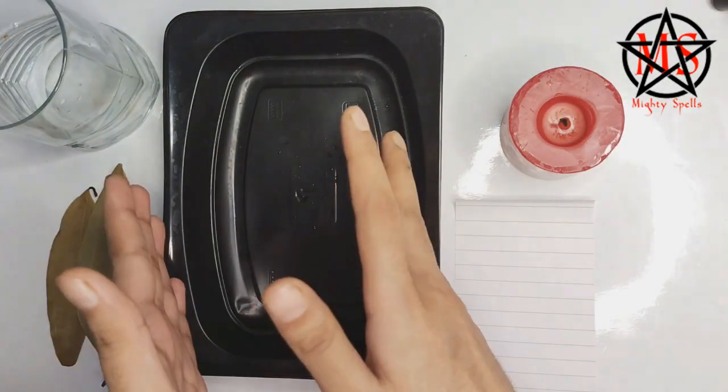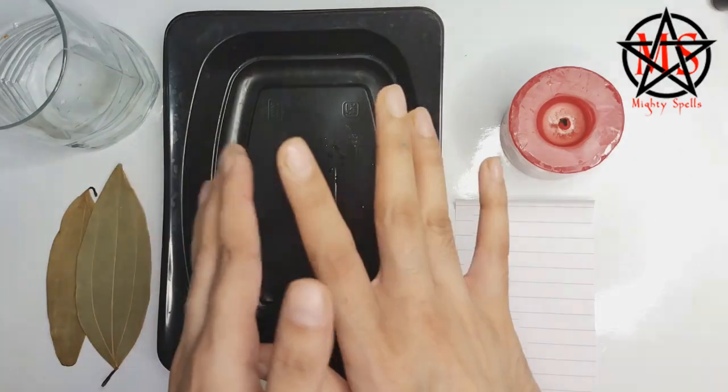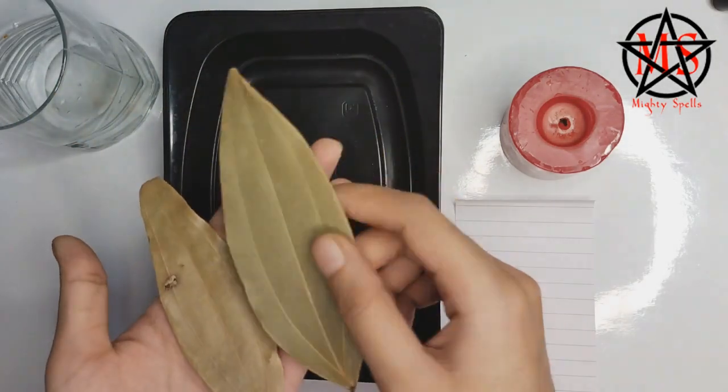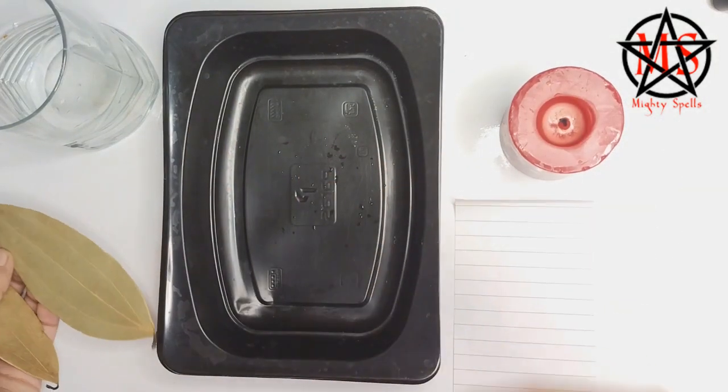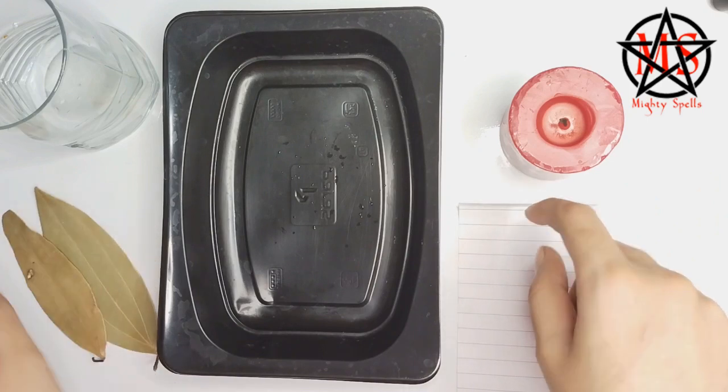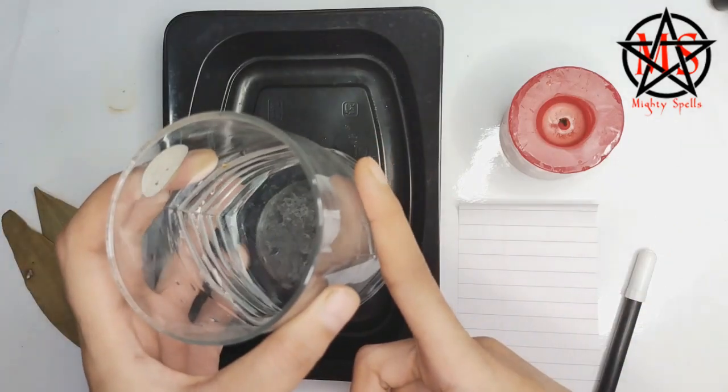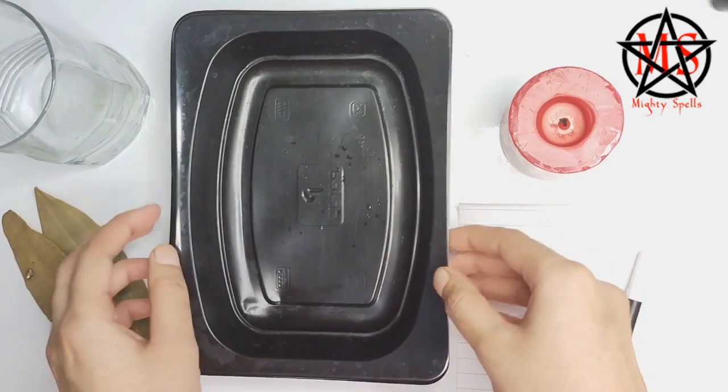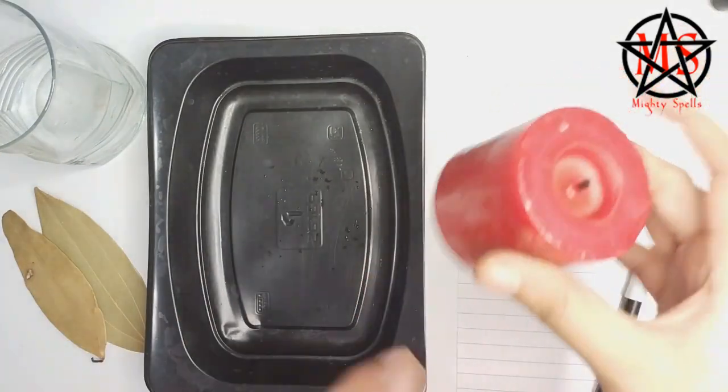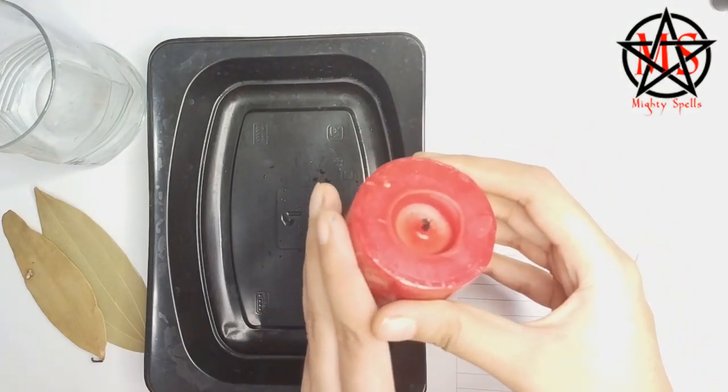To do this spell, you require two bay leaves like this, a black pen, water, a palette, and red scented candle. Very simple material.